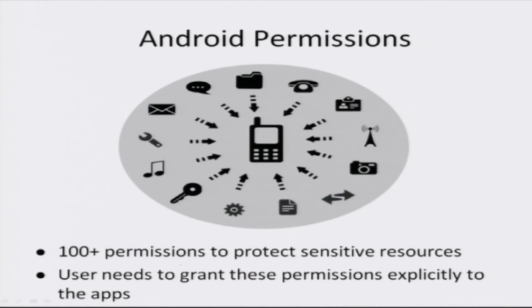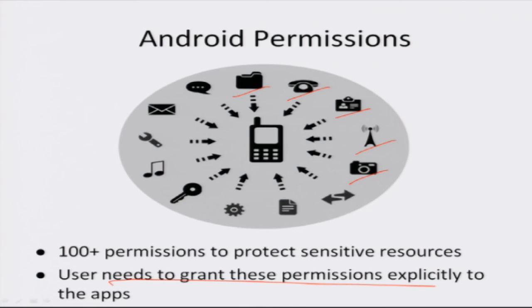Now let's look at the security aspect of Android. Our current smartphones hold sensitive information like files, call data, contacts, location history, pictures, and many other private documents. Android provides 100+ permissions, and these permissions must be explicitly granted by the user for any application to access sensitive information. In summary, we have looked at Android, how it differs from traditional operating systems, its architecture and main components, the update process across versions, and the application model and security model.